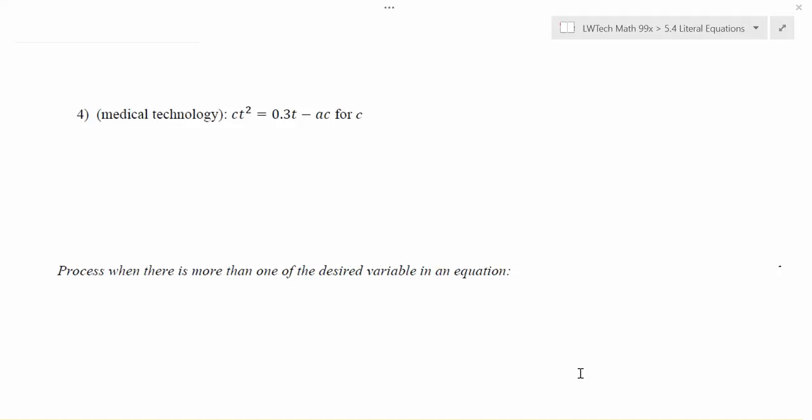In this example, we're being asked to solve this formula for C: Ct squared equals 0.3t minus ac. This problem is a little different than problems we've done before because notice that we have two different Cs in the equation.